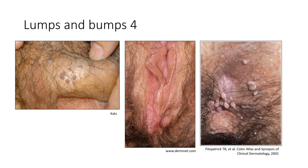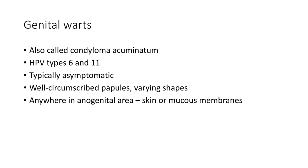Lumps and bumps number four: grayish-brown bumps on the penile shaft, a large spot on the vulva, and perianal bumps — these are genital warts, technically condyloma acuminatum. Caused typically by HPV types 6 and 11 (included in the Gardasil vaccines), they're typically asymptomatic, well-circumscribed papules with varying shapes. They can be flesh-colored, darker, or slightly lighter than skin tone, and can be found anywhere in the anal-genital area.